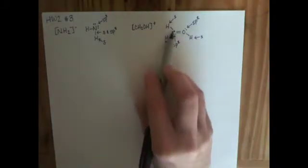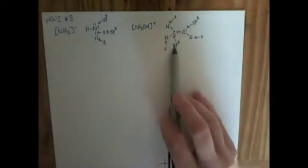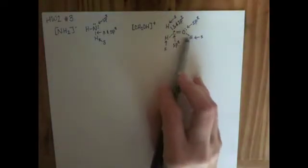The carbon-hydrogen bond comes from an overlap of hydrogen's S orbital with carbon's SP2 orbital, so this is an S and SP2 overlap. The same applies to the other carbon-hydrogen bond. The oxygen-hydrogen single bond is going to be an S orbital from the hydrogen overlapping with an SP2 orbital from the oxygen, so that's also an S and SP2 overlap.